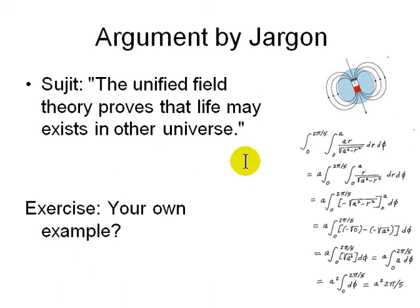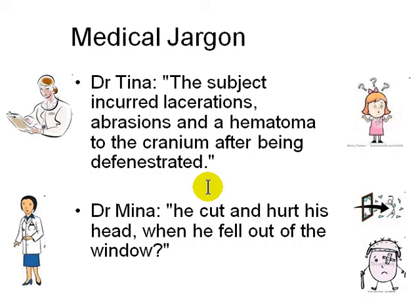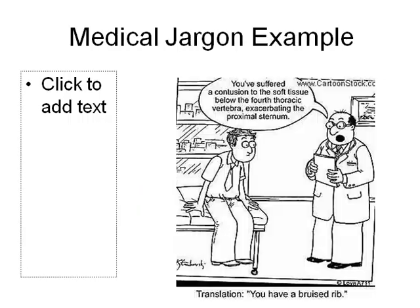Argument by jargon is seen a lot in newspapers. For example: 'The unified field theory proves that life exists in other universes — here is the proof.' The jargon sounds fancy but none of it is well defined. You also see medical jargon: a doctor says 'The subject incurred lacerations, abrasions and haematoma to the cranium after being defenestrated.' In plain English, that just means he cut and hurt his head when he fell out of the window. Similarly, 'You have suffered a contusion to the soft tissue below the 4th thoracic vertebra exacerbating the proximal sternum' just means you bruised a rib.